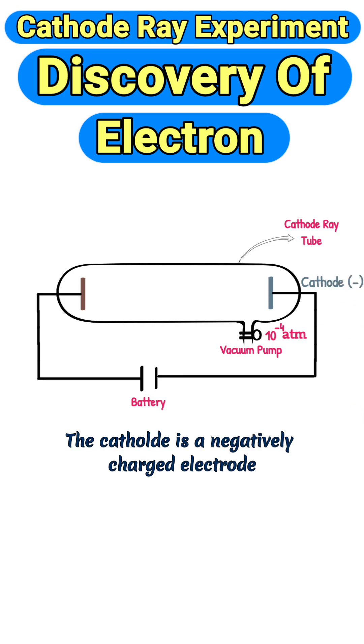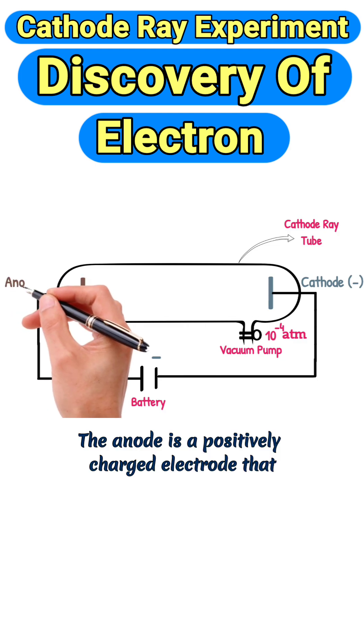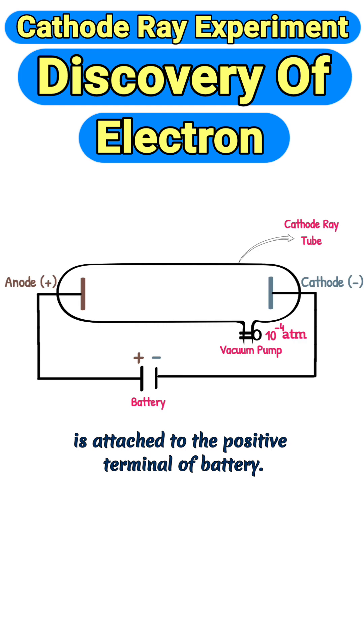The cathode is a negatively charged electrode attached to the battery's negative terminal. The anode is a positively charged electrode attached to the positive terminal of the battery.